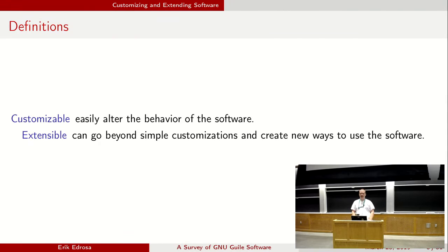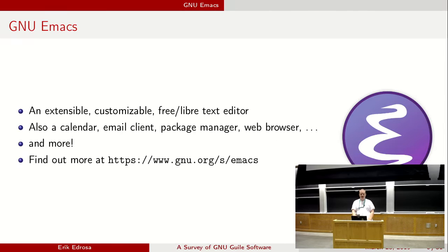Let's get some definitions. By 'customizable,' it means the software is easy to alter in behavior. When something is 'extensible,' you can go beyond simple customizations and create new ways to use the software. And before we talk more about Guile, let's talk about GNU Emacs, which inspired the whole creation of Guile. Emacs is an extensible, customizable, free and libre text editor — also a calendar, an email client, a package manager, a web browser, and even more as users keep extending and sharing Emacs extensions.